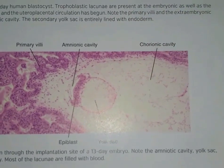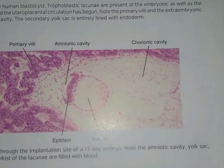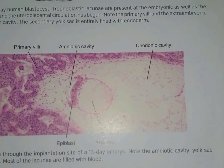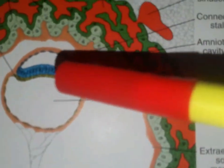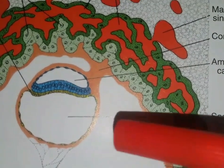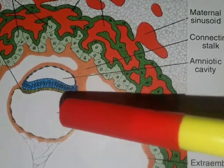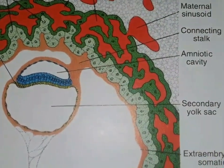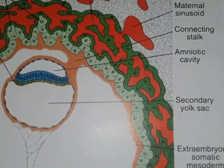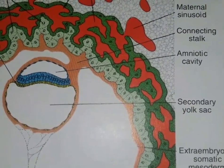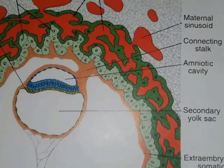So this was all about how the second week of development takes place — the formation of the bilaminar germ disc with the epiblast and hypoblast cells. In further videos, we will study the trilaminar germ disc, which involves the ectoderm, endoderm, and mesoderm.